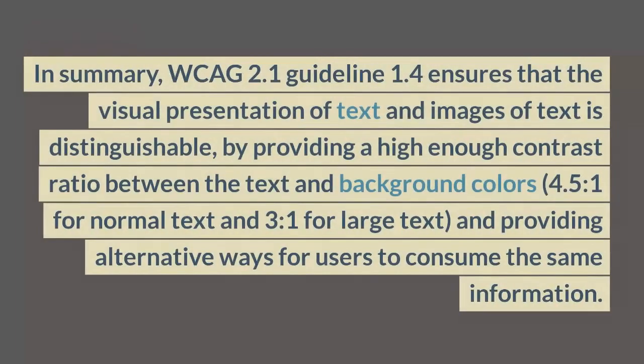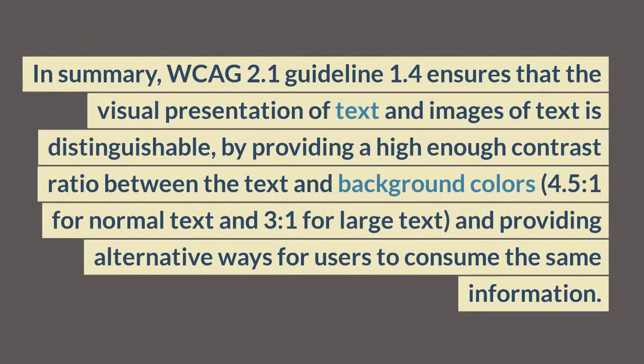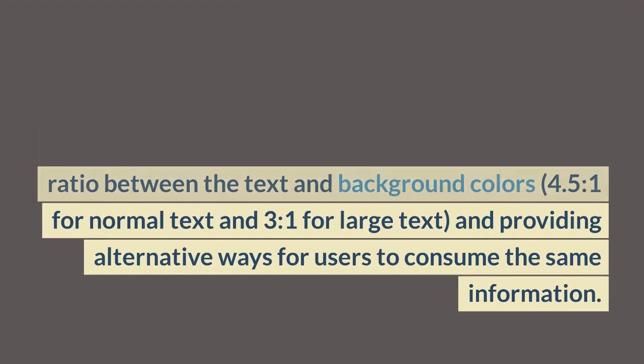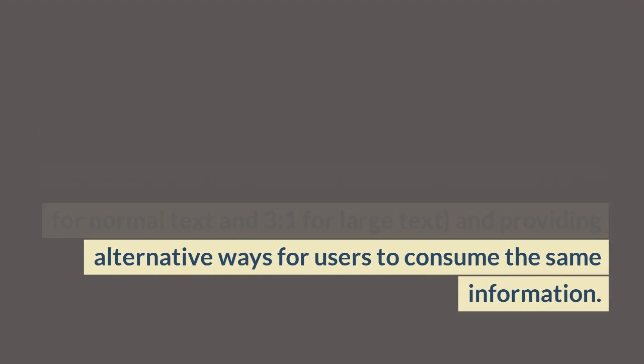In summary, WCAG 2.1 guideline 1.4 ensures that the visual presentation of text and images of text is distinguishable, by providing a high enough contrast ratio between the text and background colors — 4.5 to 1 for normal text and 3 to 1 for large text — and providing alternative ways for users to consume the same information.